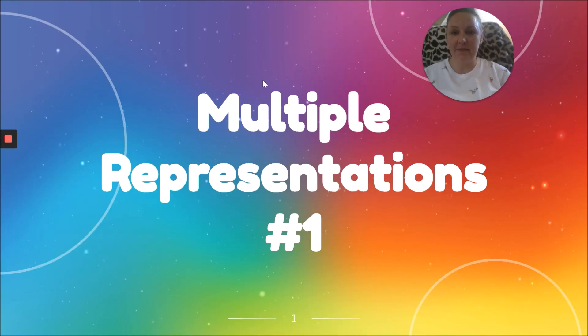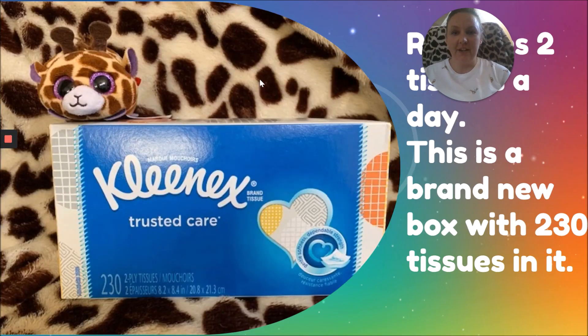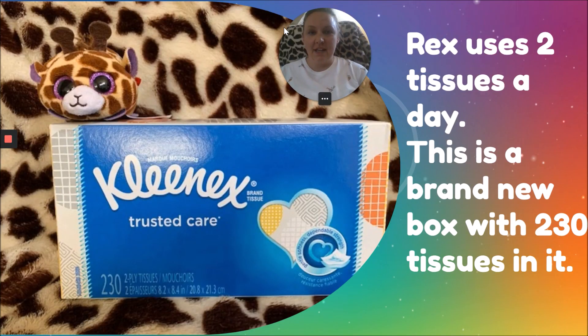Multiple representations number one. We have a situation that we are going to represent in multiple ways. Here it is. Rex uses two tissues a day. This is a brand new box with 230 tissues in it. Let's represent it.